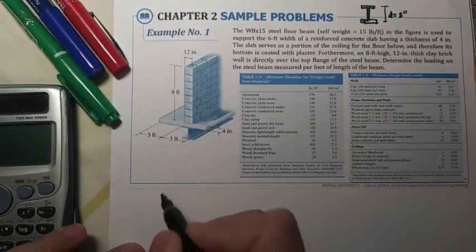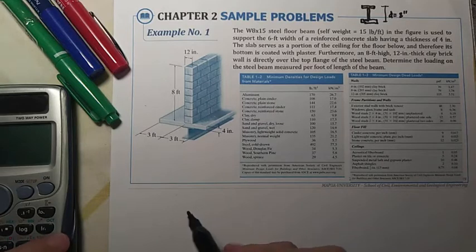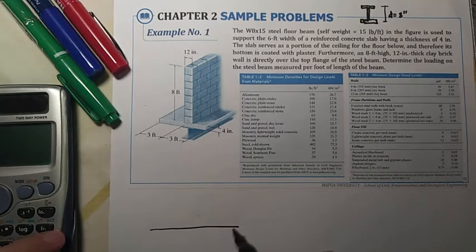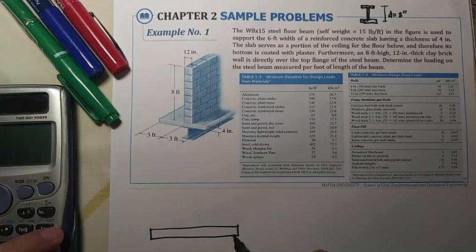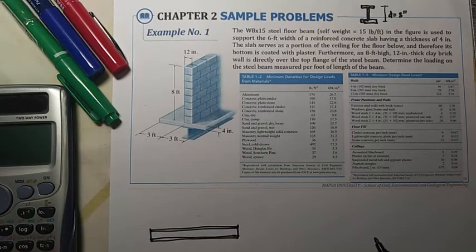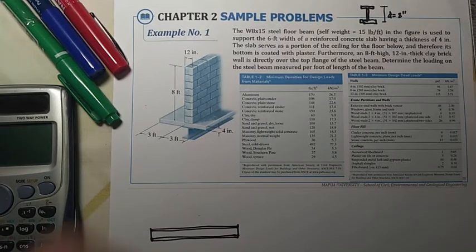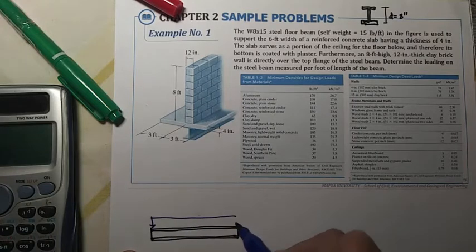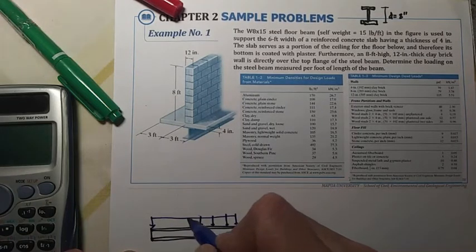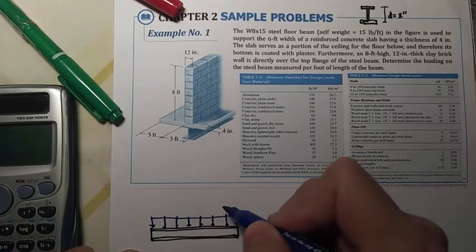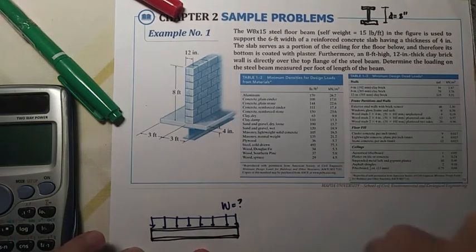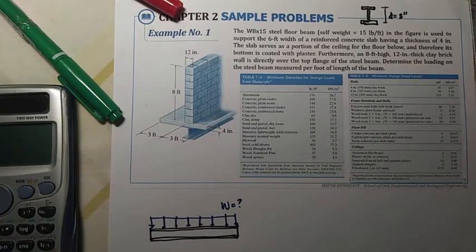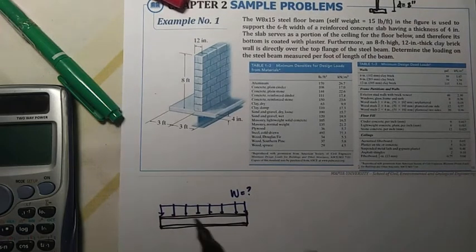So we're going to solve for the loading. Let's say this is the beam, the wide flange beam. So we're going to identify what are the loadings. This would be W, the uniform load. So let us identify the different loads.